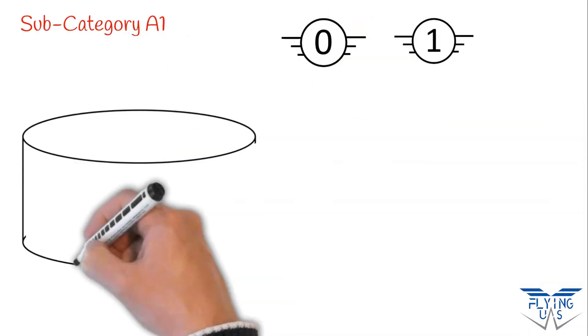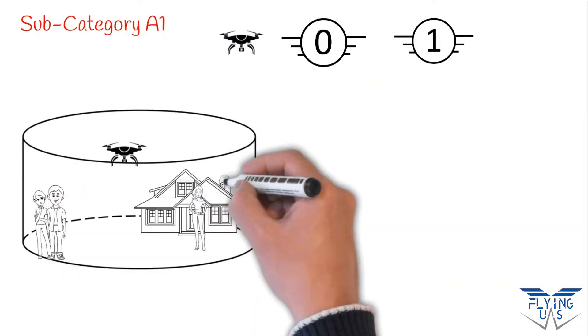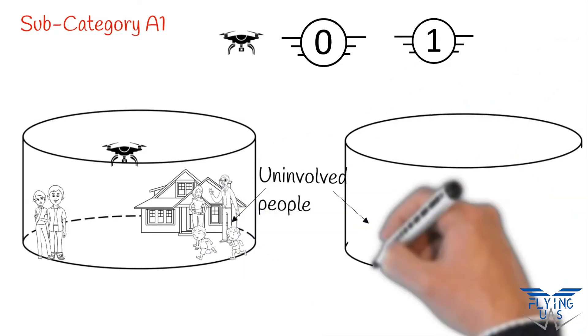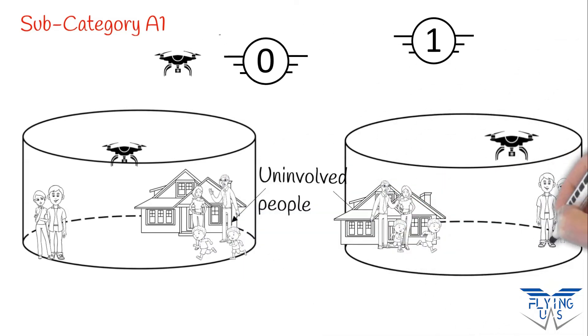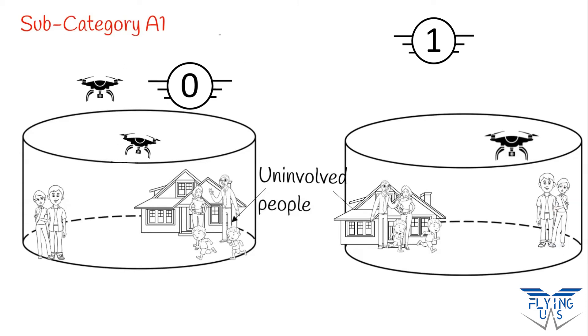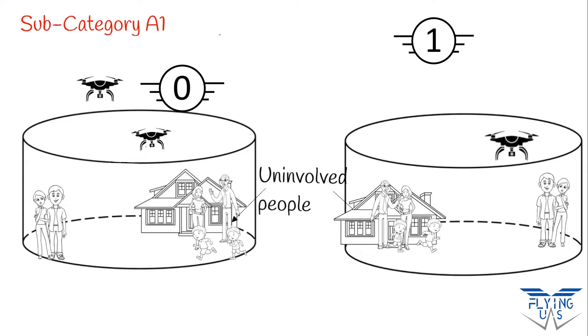Subcategory A1 can be used by drones weighing less than 250 grams or belonging to class C0 or C1. For drones classified C0 or weighing less than 250 grams, you can overfly uninvolved people for a limited time. Uninvolved people are the ones not informed of the flight and the risk associated with it.